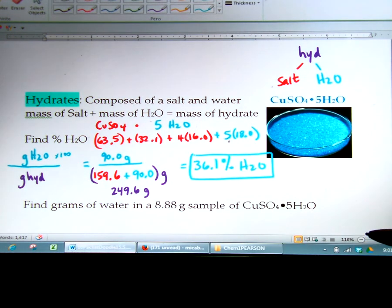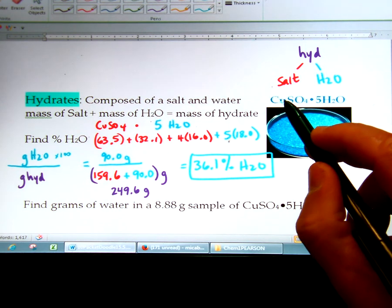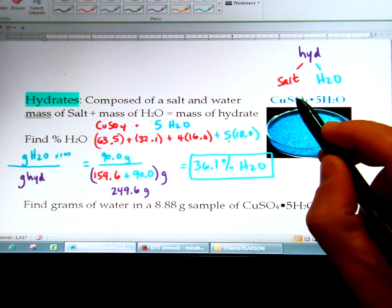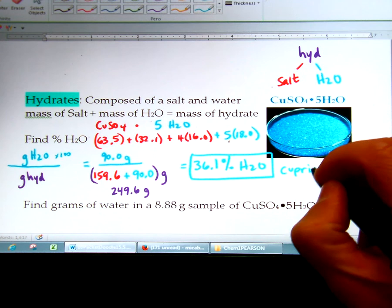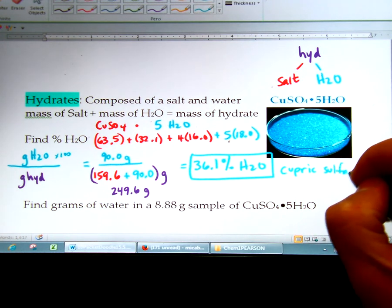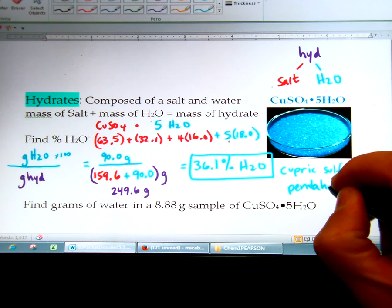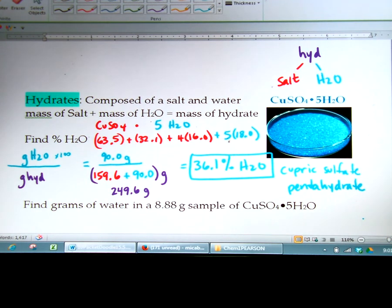Now you want to name this hydrate. So on the homework tonight when you name it, you're going to call this, you might not know how to do this yet officially, but I'm going to tell you the name is cupric sulfate pentahydrate. So if you have trouble with the naming, don't worry about that, we'll talk about that probably the next day.